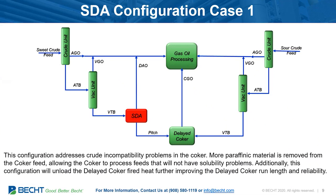One of the configurations — Case 1 — shows what we're talking about: the vacuum tower bottoms are sent to an SDA unit. In this case, we're sending a sweet crude's vacuum bottoms to the SDA, while on the other hand, a sour crude's vacuum tower bottoms go directly to the coker. Now the pitch from the solvent de-asphalting unit looks more like the VTBs from the sour crude unit, and I've eliminated the solubility problem so my coker will operate much better.